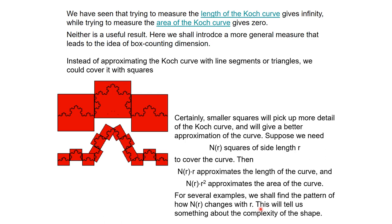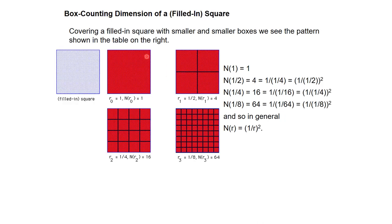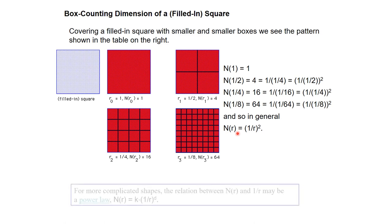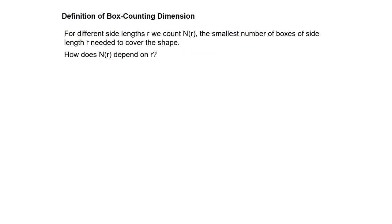For several examples: a 1D object needs N = 1/r boxes, a 2D object needs N = 1/r² boxes, and a 3D object needs N = 1/r³ boxes. For more complicated shapes, the relation between N(r) and r is a power law: N(r) = k · (1/r)^d, where d is the dimension of the object. A square is 2D, a line is 1D, a cube is 3D. The box-counting dimension requires counting the smallest number of boxes of side length r needed to cover the shape.